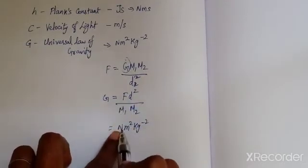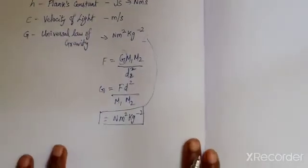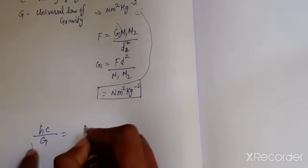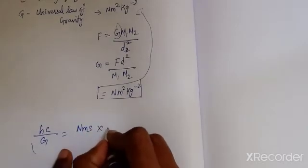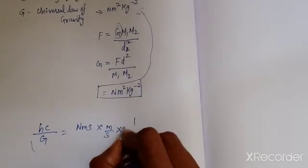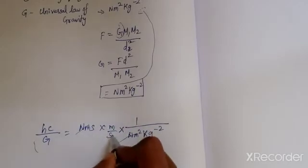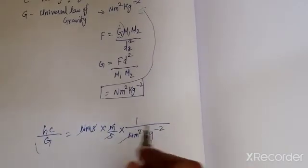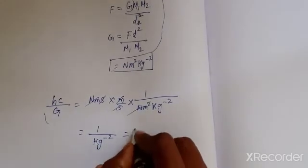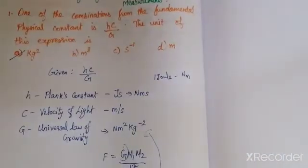The force gives newton, d squared is m², so substituting this into our given formula hc/g: we get (N·m·s⁻¹) × (m·s⁻¹) divided by (N·m²·kg⁻²). So inside: newton meter, newton meter, second, second, and another meter - everything will get cancelled, so you will get 1 by kg power minus 2, which can be written as kg squared. So the answer is (a) kg².